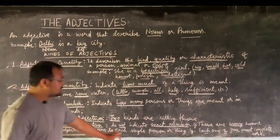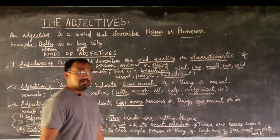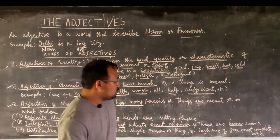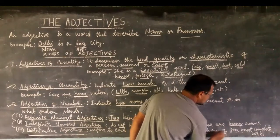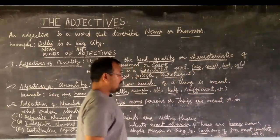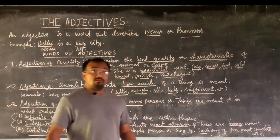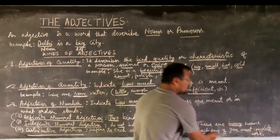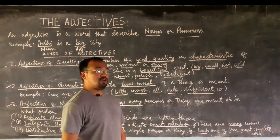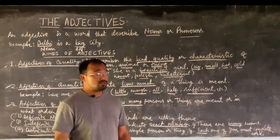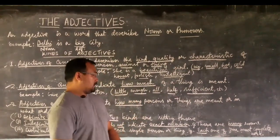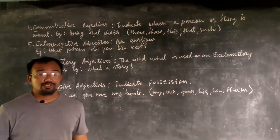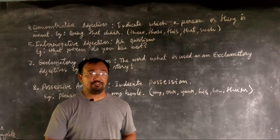The last sub-category is the distributive adjective. It refers to each single person or thing. For example, 'Each one of you must complete the work.' Here, 'each' refers to everyone in the class individually — it means everyone must complete their homework. So the word 'each' is a distributive adjective.